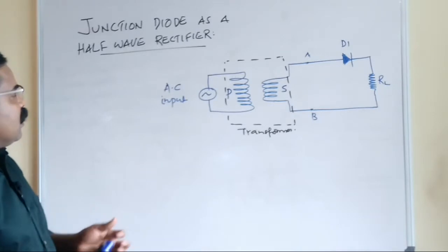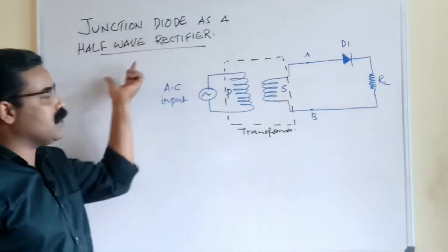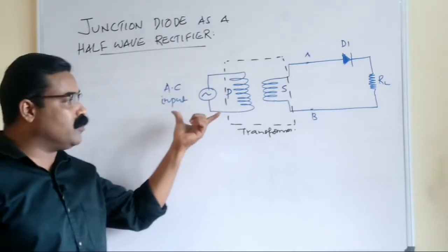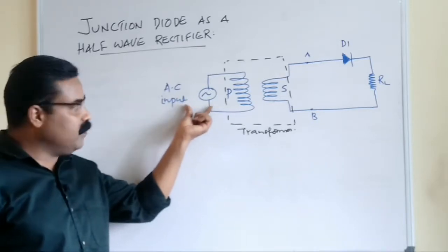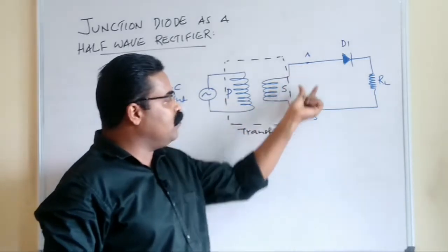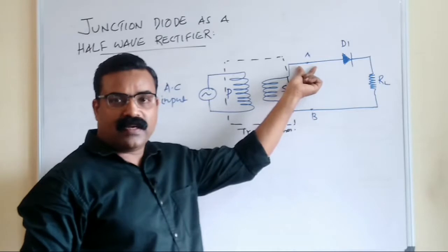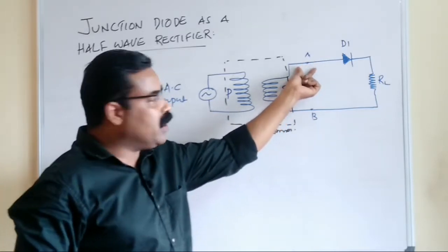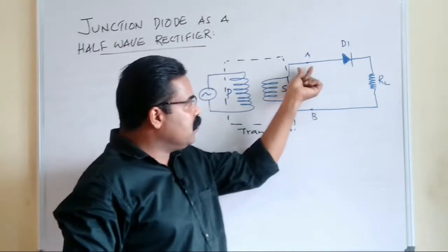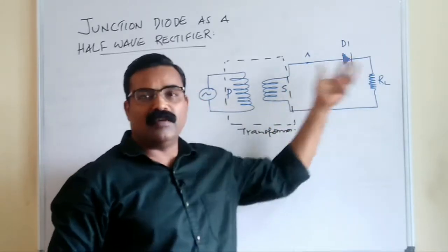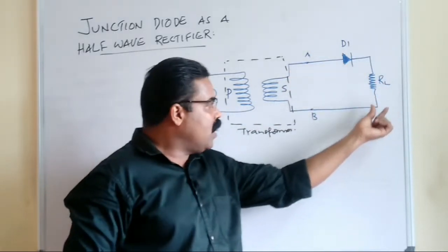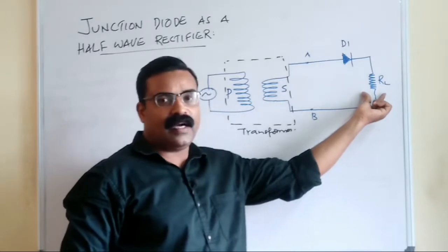This is the required circuit diagram to show how a junction diode can be used as a half wave rectifier. When an AC input is given to the primary, that AC is available at the secondary. In the positive half cycle, A becomes positive. Since A is connected to the P end of diode D1, positive is connected to positive, so the diode becomes forward biased. When forward biased, it allows current to pass through the load resistance RL.